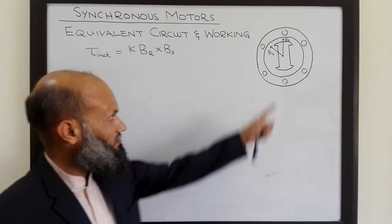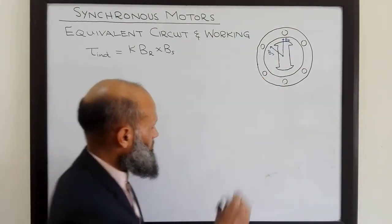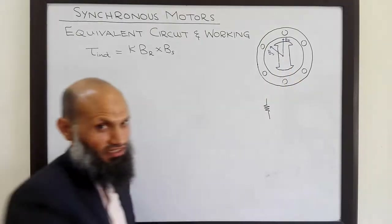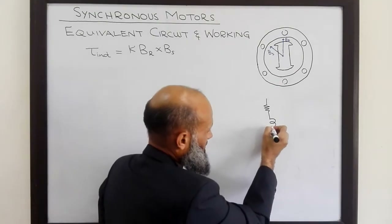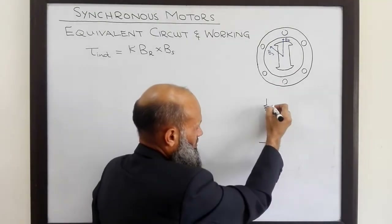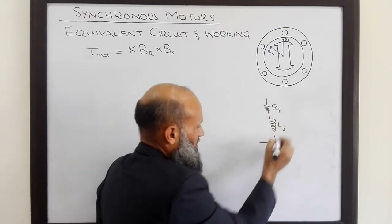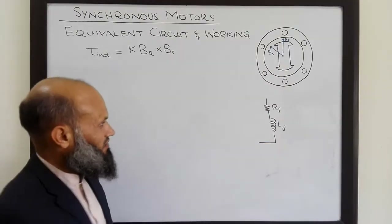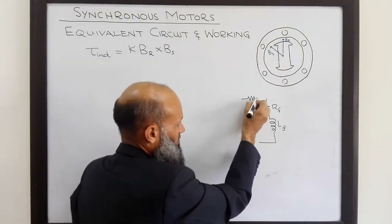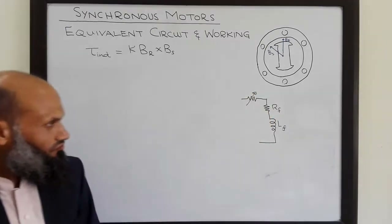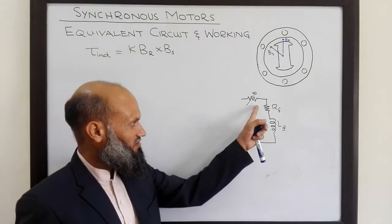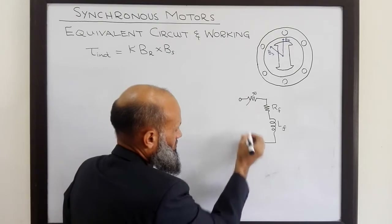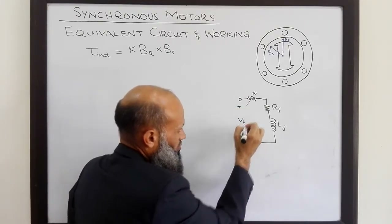For the rotor circuit, we know that these are generally electromagnets. So the equivalent circuit of the rotor includes the resistance of the field windings RF and the inductance of the field windings LF. These field windings are excited by a DC voltage source, and sometimes an additional variable resistor is inserted in series with the field windings. With this additional resistor, we can control the field current.